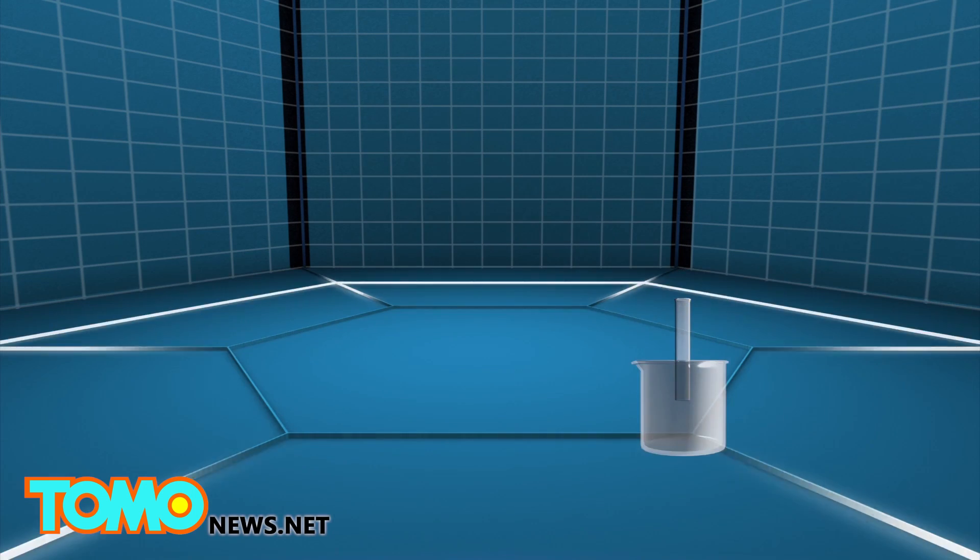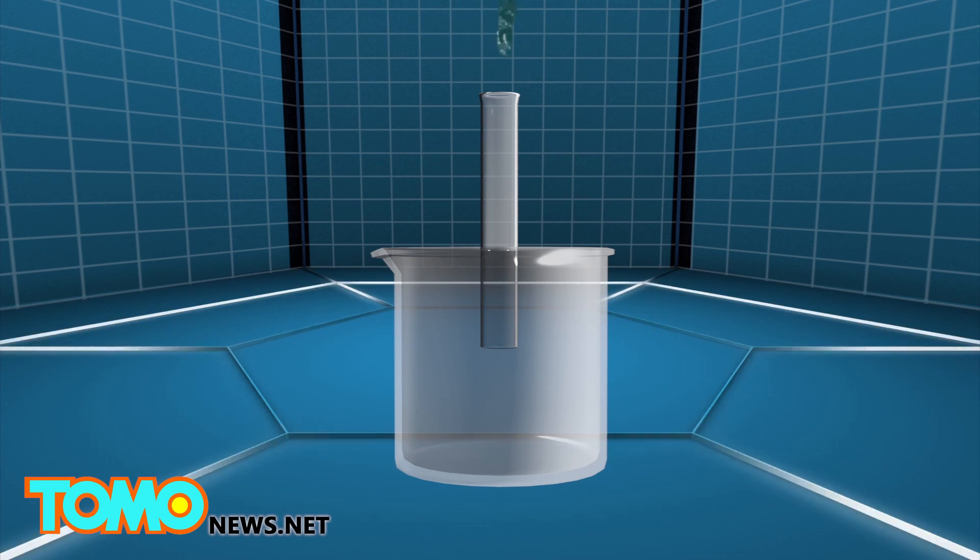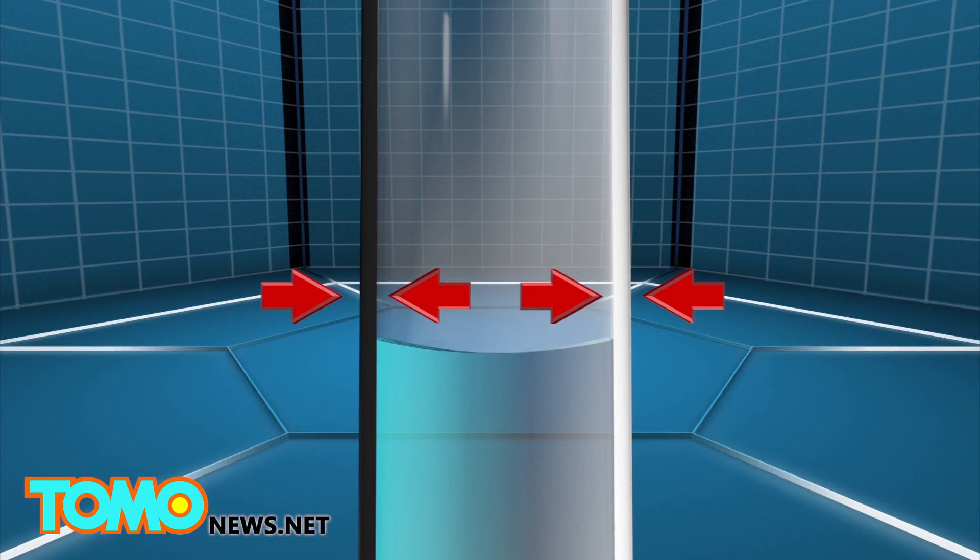Capillarity describes the flow of liquid into narrow spaces, without or in opposition to external forces like gravity. The binding force between the water and the inner wall of the narrow tube pulls the edges of the water up.